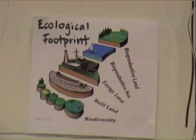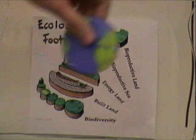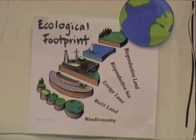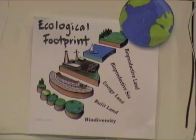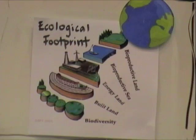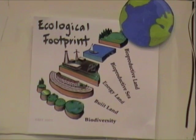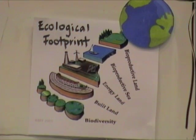What's an ecological footprint? The ecological footprint is a measure of human demand on the Earth's ecosystems. It compares human demand with Earth's ecological capacity to regenerate and estimates how much of the Earth it would take to support humanity if everyone lives a given lifestyle.